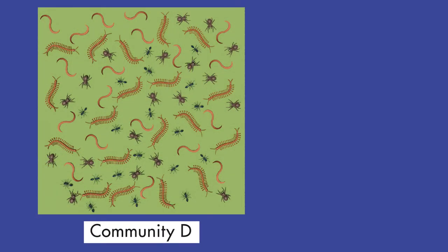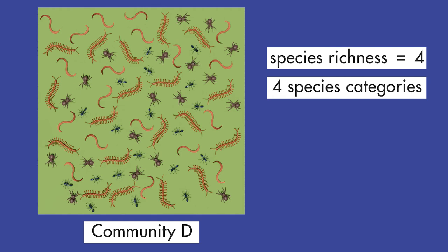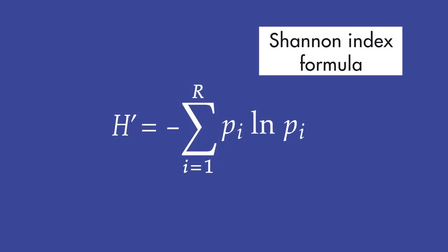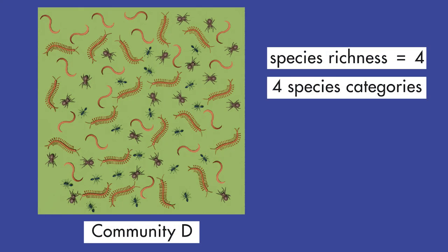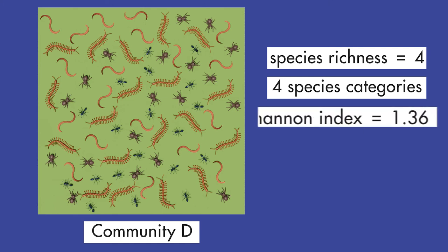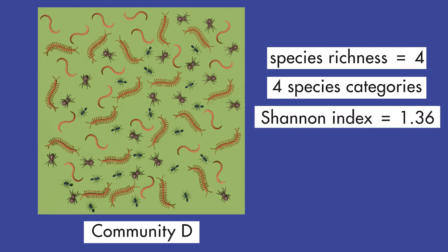A community with organisms evenly distributed among several species categories would have a higher Shannon Index. In this example, community D also has 76 organisms, but they are evenly distributed among four species categories, giving it a species richness of 4. Determining a Shannon Index requires some complex mathematics, so we will provide you with the Shannon Index values for this experiment. The Shannon Index for community D is 1.36.